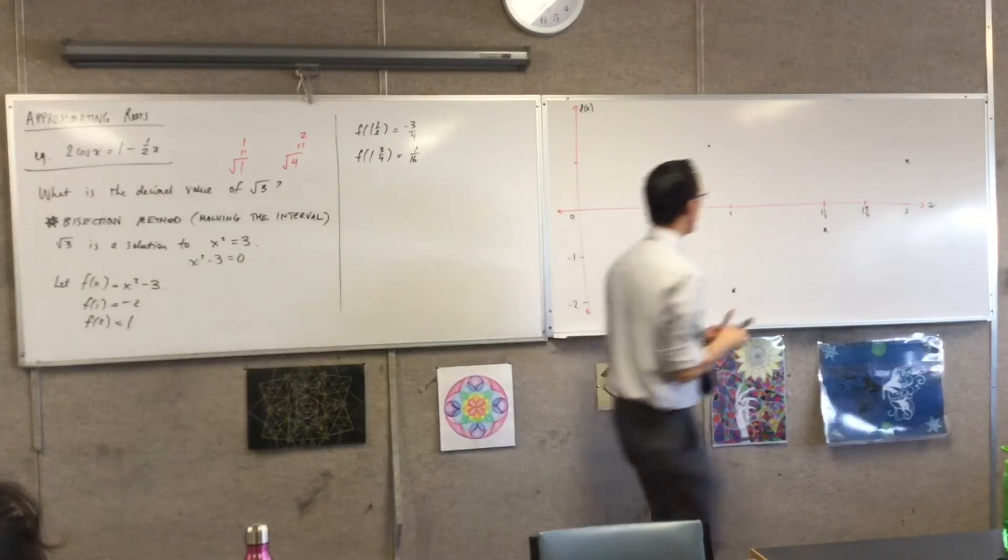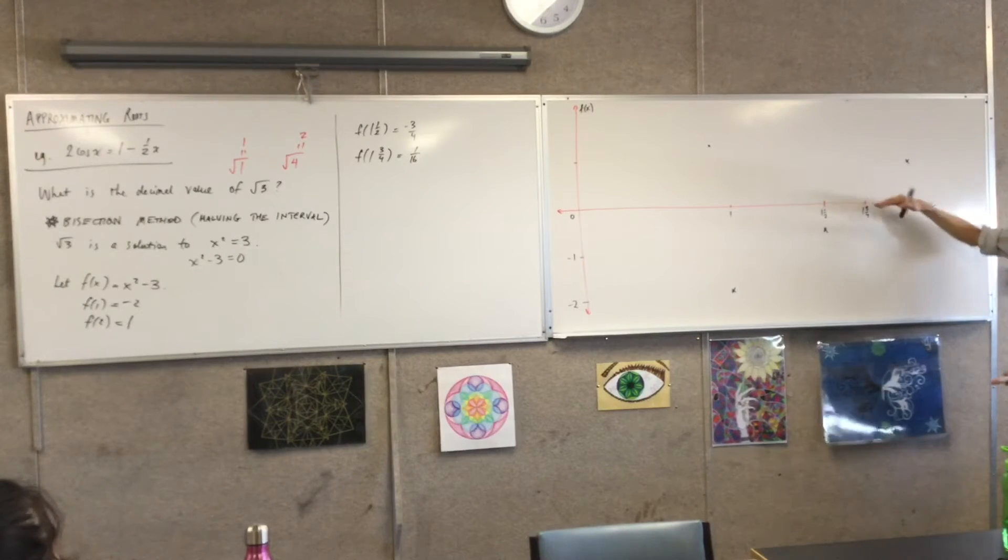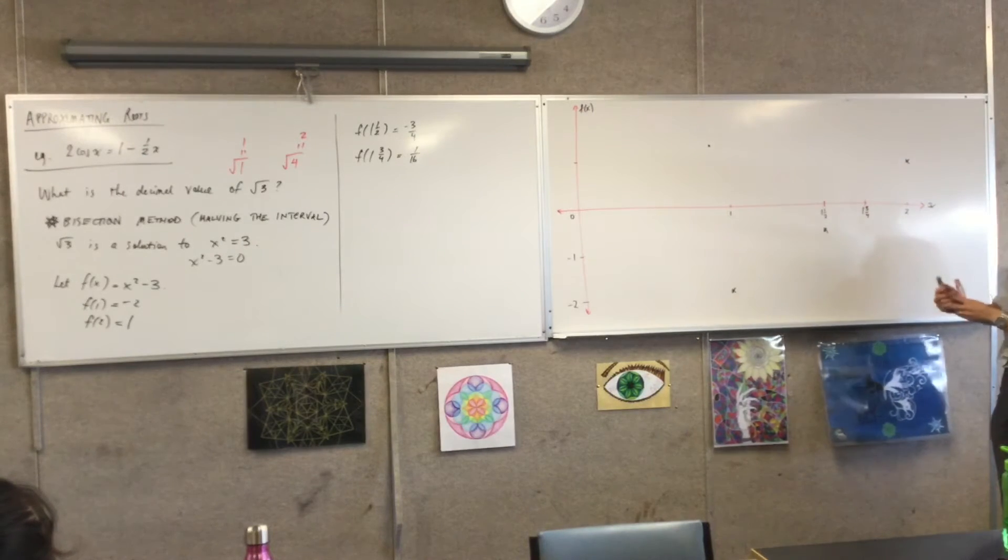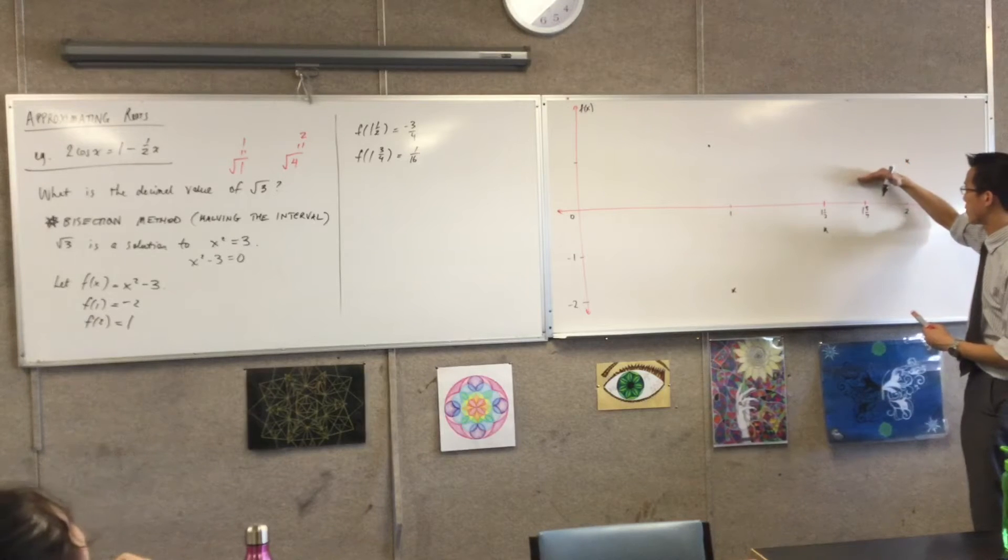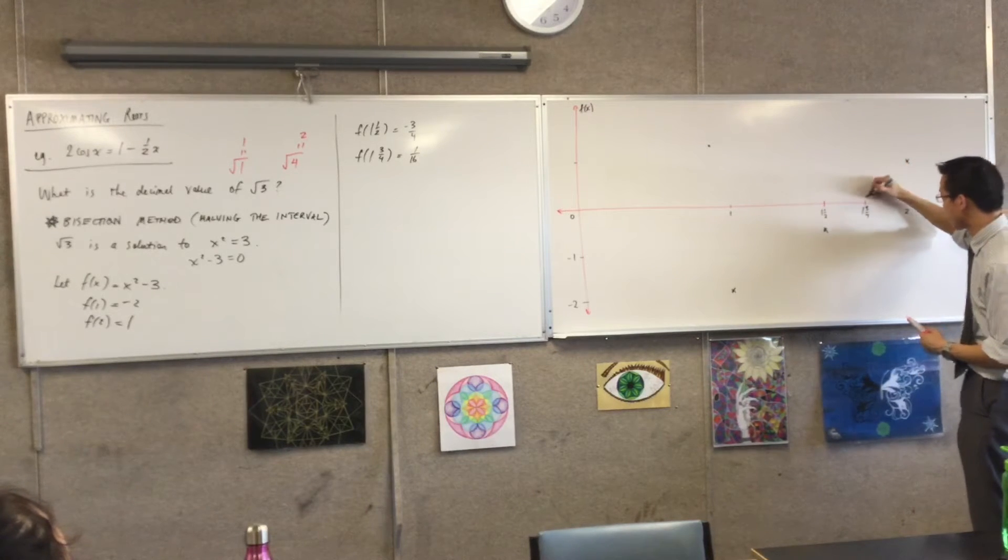So where is that? 1 and 3 quarters. Well, it's above, isn't it? I've got a positive. It's not very far away either. 1 on 16, that's 1. So that's a half. That's a quarter and 8. I'm about there.